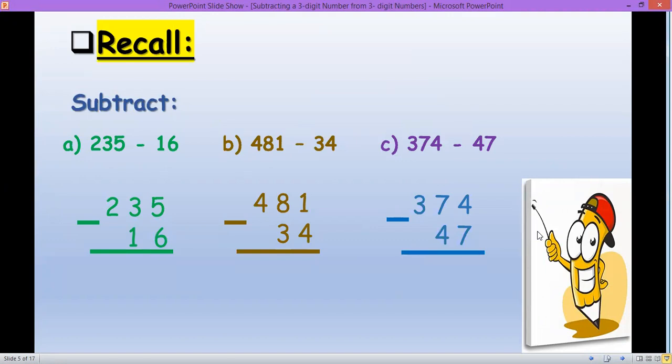235 minus 16. Basically we cannot subtract six from five. So five will borrow from three, which is actually borrowing 10, not only one. So it becomes 15 and three becomes two. 15 minus six is nine, two minus one is one, and bring down two. Since on this part is zero, we can just bring down two. Now let's go to the second question.